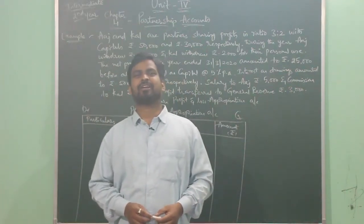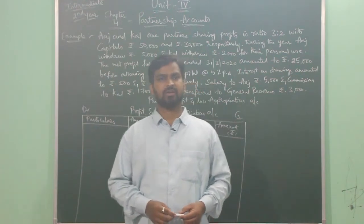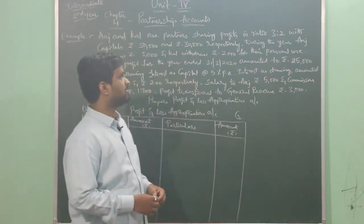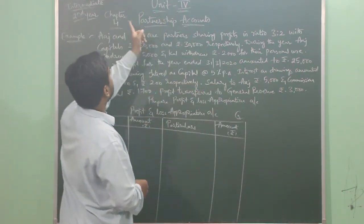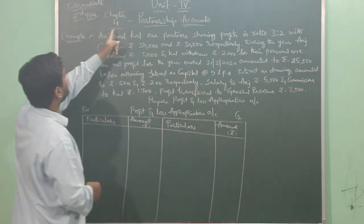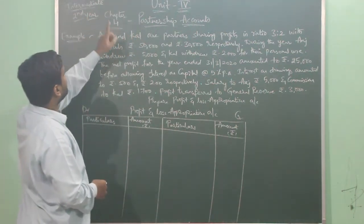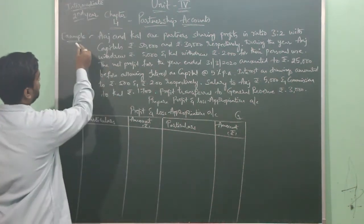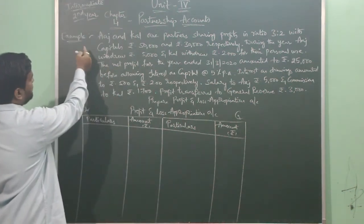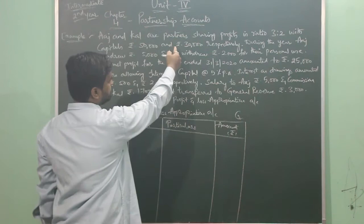Assalamu alaikum warahmatullahi wabarakatuh. Hello viewers, I'm Muhammad Abdul Habib, welcome you all to AIM Tutorial for Accounts. In this video I'll be explaining the chapter Partnership Accounts under Unit 4, Chapter 4. It's a chapter for Intermediate Second Year students of the State Board of Telangana. Let us have an example problem on Profit and Loss Appropriation Account.